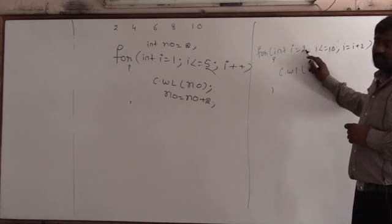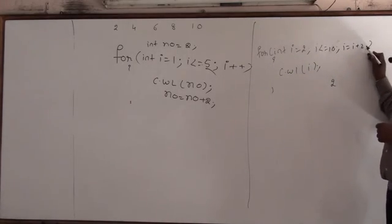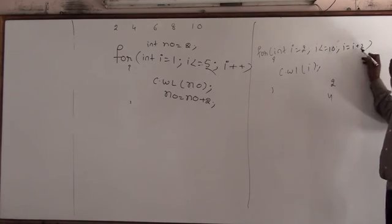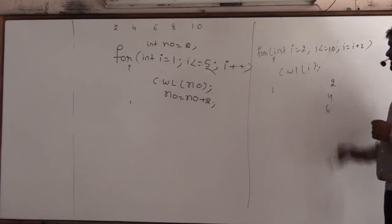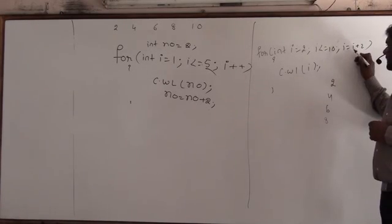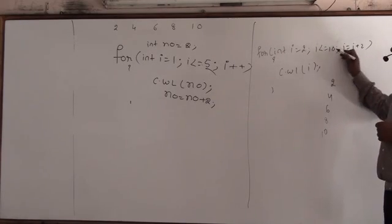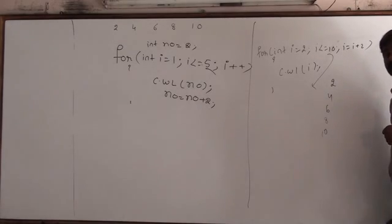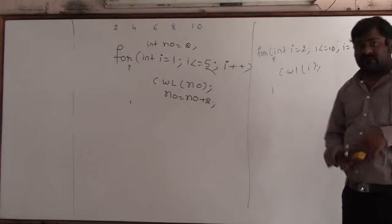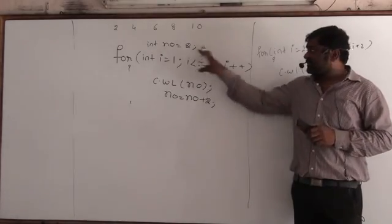See here: i is 2. 2 less than or equals 10 — true, print 2. i = 2+2 = 4. 4 less than or equals 10, print 4. i = 6. 6 less than or equals 10, print 6. i = 8. 8 less than or equals 10, print 8. i = 10. 10 less than or equals 10, print 10. i = 12. 12 less than or equals 10 — false. That's both ways of solving the same problem. The second method is also correct, but the first methodology is the best way to work with any type of problem without confusion.